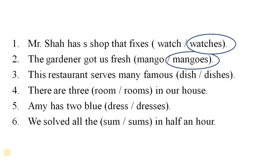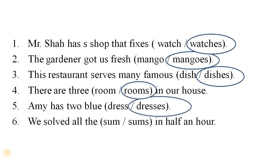Next: this restaurant serves many dish or dishes — the answer is this restaurant serves many famous dishes. Next: there are three rooms in our house. Next: Amy has two blue dress or dresses — Amy has two blue dresses. The last is: we solved all the sum or sums in half an hour.